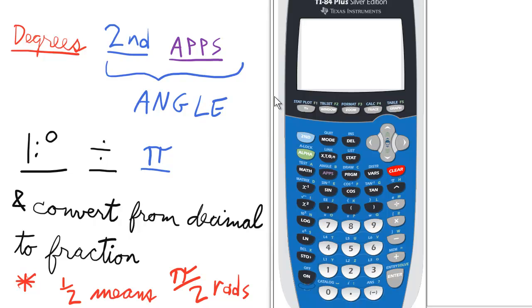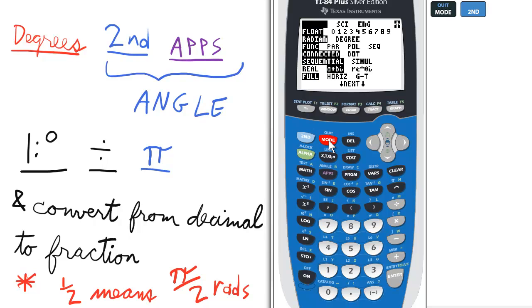Basically, you want the target unit of angular measure to be your mode. So since we want to end up in radians, we want to make sure we're in radian mode. We are, so good to go.